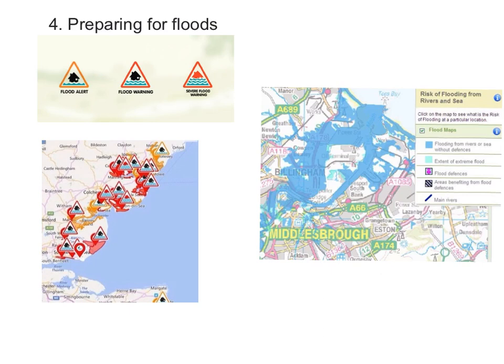We can also produce maps like the one shown here, where we can see areas prone to flooding where there is no sea defence or river defence. This helps determine how land can and cannot be used, and it assists councils and local authorities in making decisions on how to prevent flooding in the future.